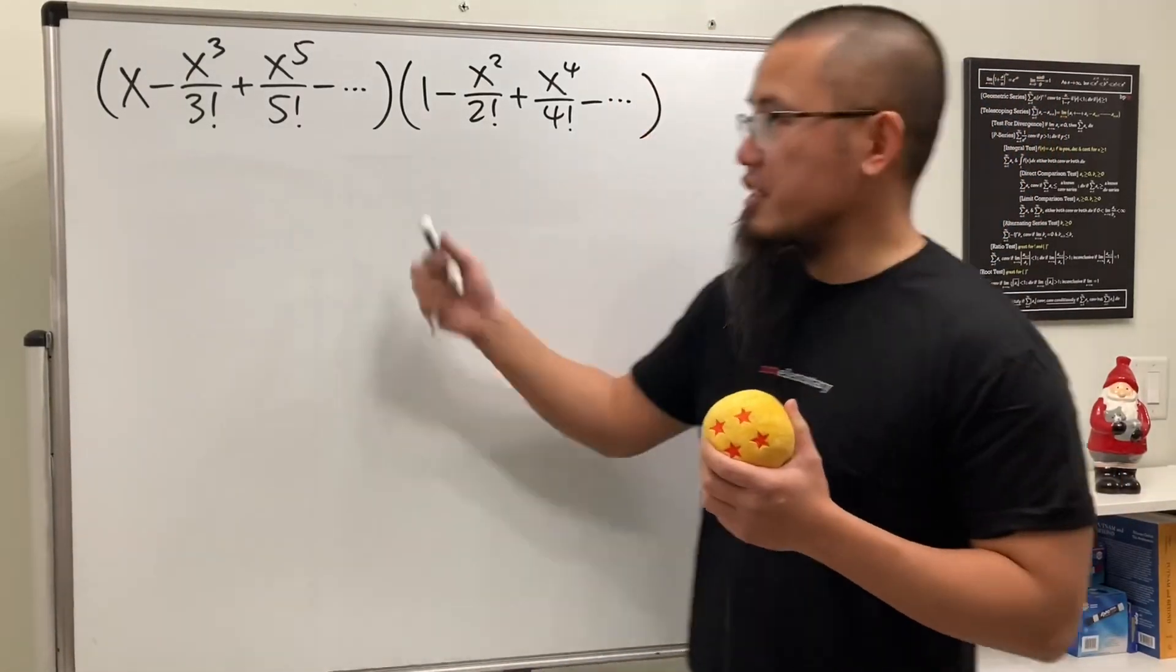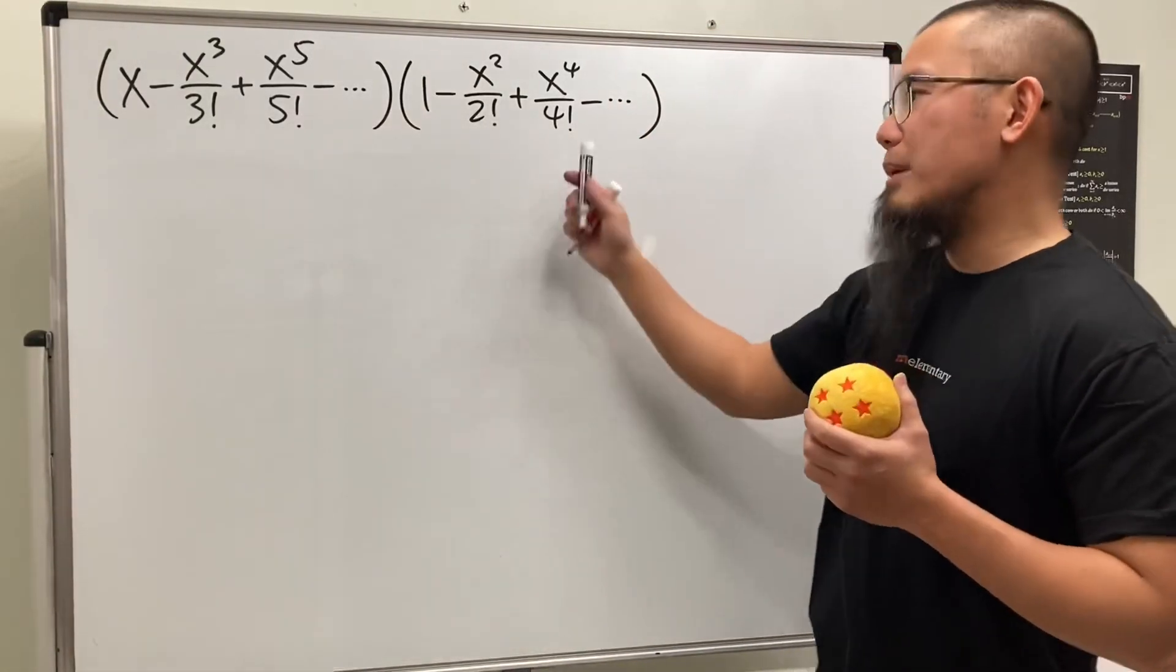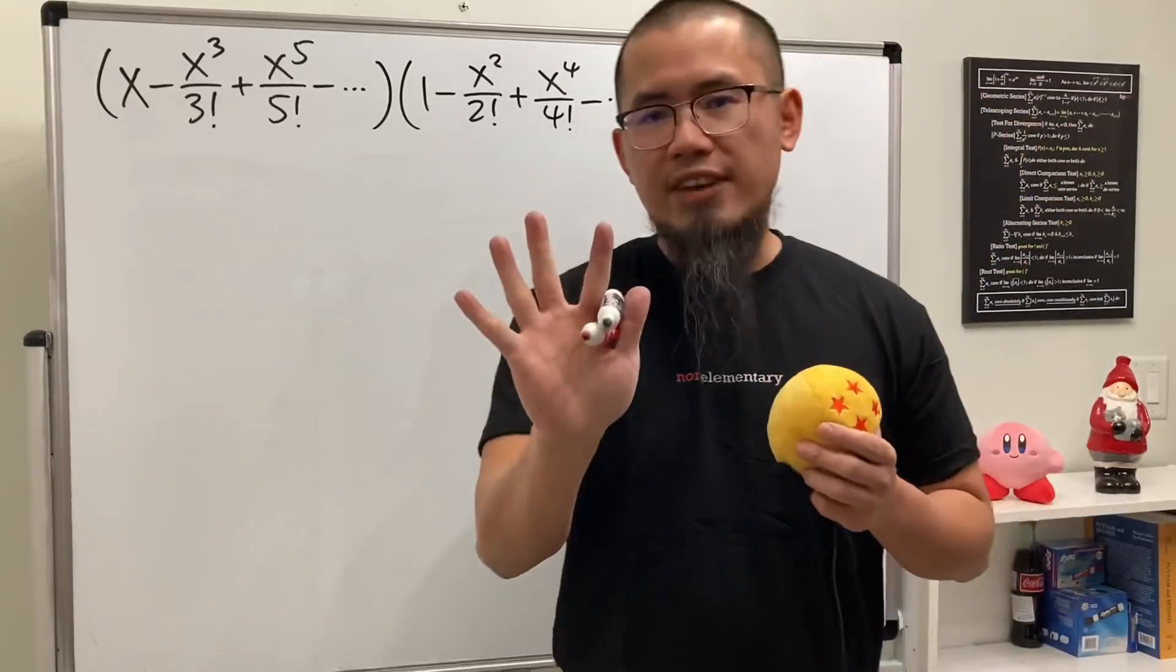So you think you can multiply polynomials? Check this out. We have this infinite polynomial times this infinite polynomial. I'll give you five seconds: 5, 4, 3, 2, 1.